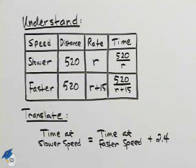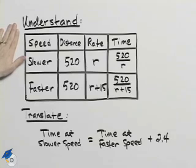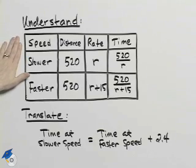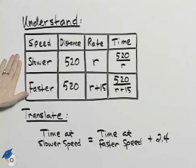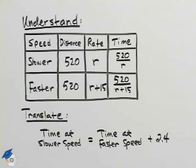The first step to solving this problem is to understand the problem. We've got two speeds that we're considering, the slower speed and the faster speed. We are considering distance, rate, and time.